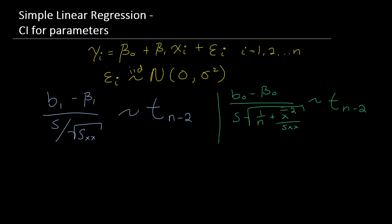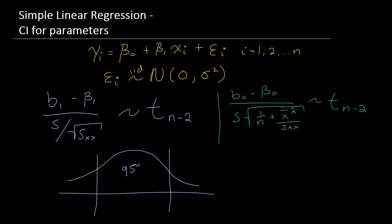Let's start with beta-1. The t-distribution looks like a normal distribution. If we want to construct a 95% confidence interval, alpha is the amount left over — that is, 1 minus the confidence level — so alpha equals 0.05 for 95%. The center area is 1 minus alpha, and the tails each contain alpha divided by 2, so 0.025 on each side.